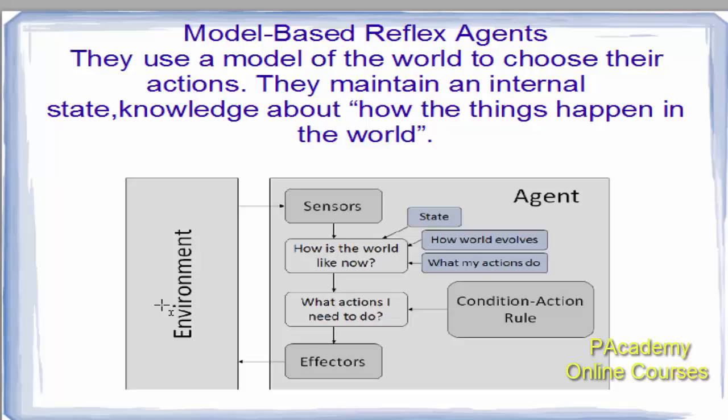The past history and states of the environment that have not been currently observed are stored in the agent and used to arrive at an outcome. Model-based reflex agents also use condition-action rules based on those outcomes to determine what the effectors will act out.